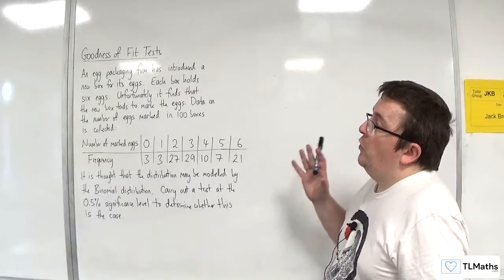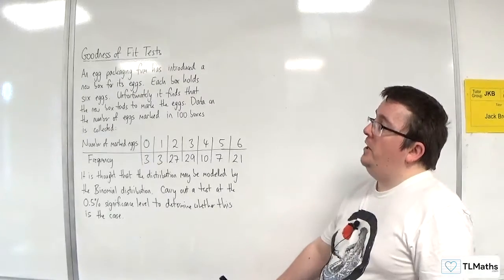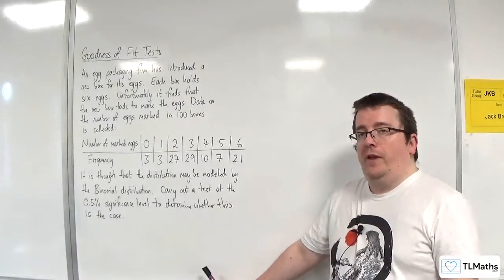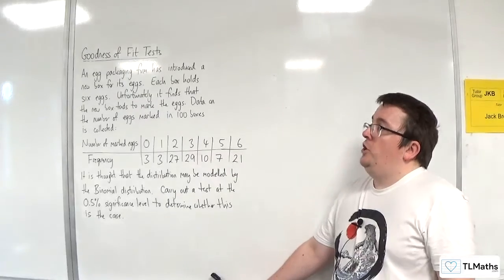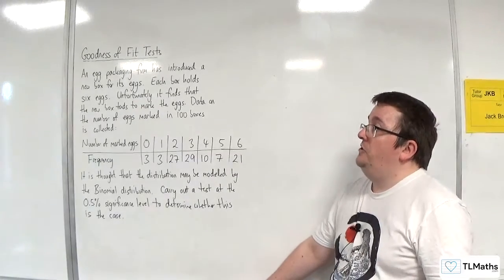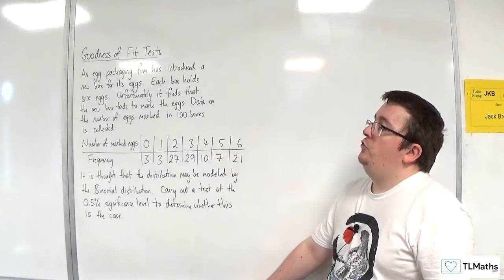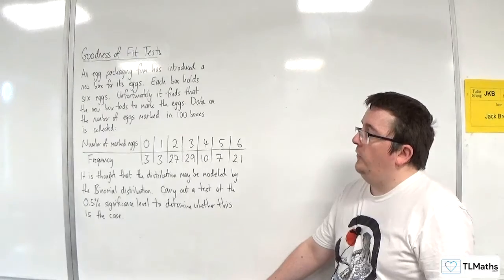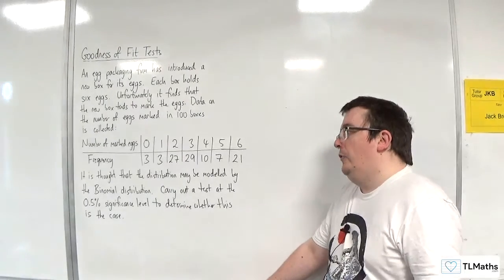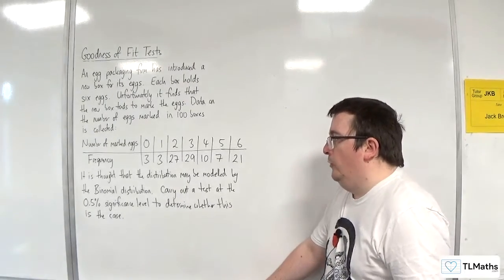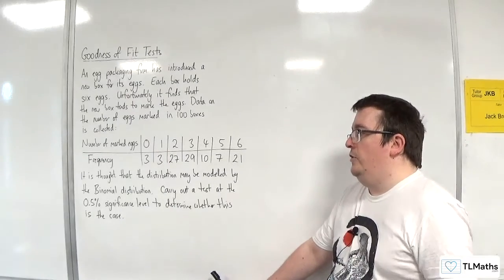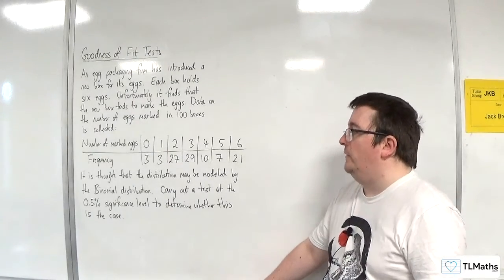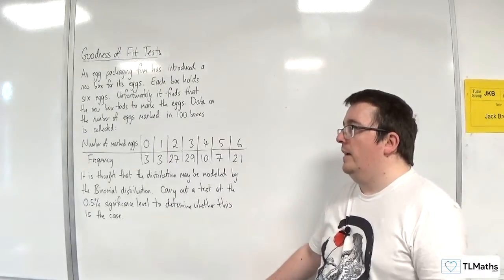In this video, we've got an egg packaging firm that has introduced a new box for its eggs. Each box holds six eggs. Unfortunately, it finds that the new box tends to mark the eggs. Data on the number of eggs marked in 100 boxes is collected. It is thought that the distribution may be modeled by the binomial distribution. Carry out a test at the 0.5% significance level to determine whether this is the case.